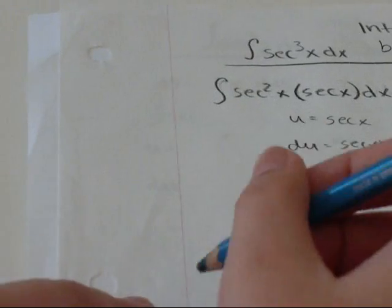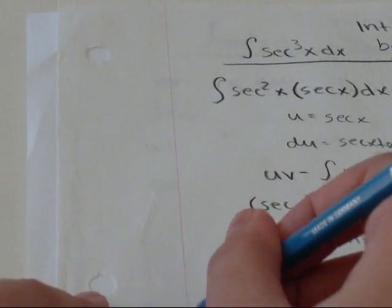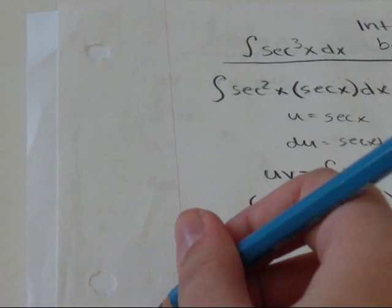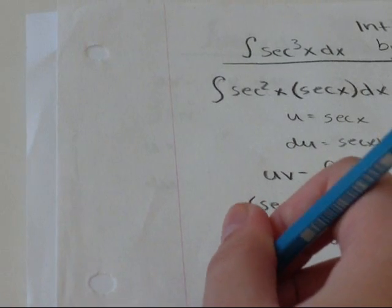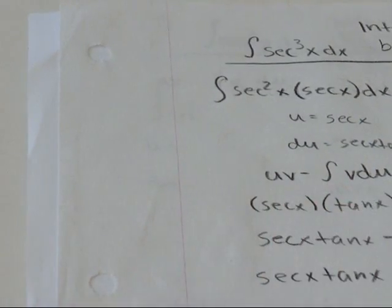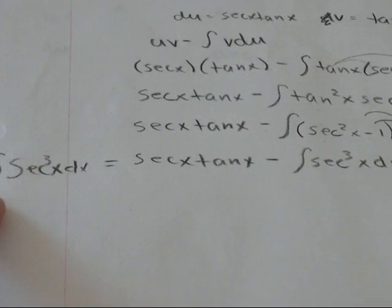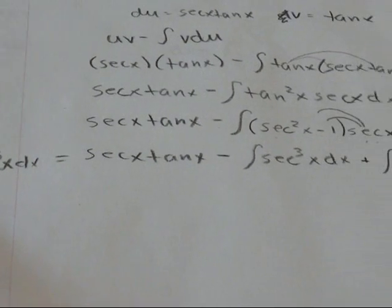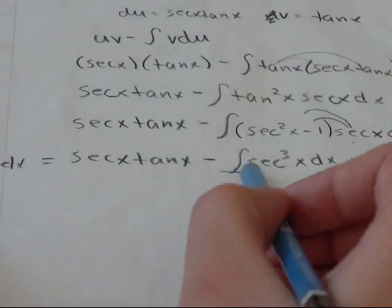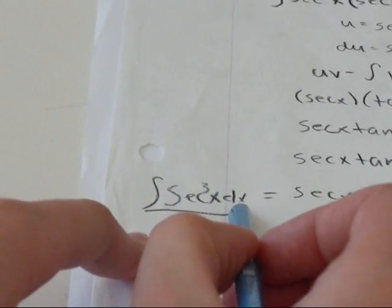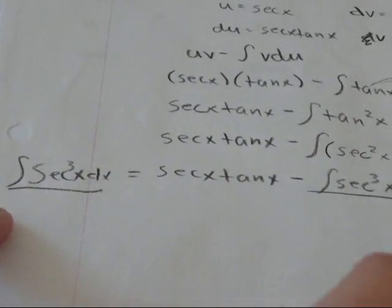Well, now we're getting that secant cubed x dx. The integral of that, the integral of secant cubed x dx equals secant tan x minus, well, the same thing. This is the same as that. So this is a minus.